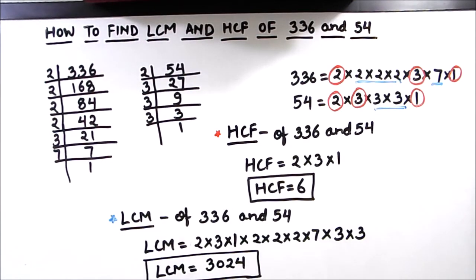So this is how, by using the prime factorization method, you can find the LCM and HCF of any numbers easily. I hope this video is helpful to you. If you like the video please give it a thumbs up and subscribe to my channel for more math videos. Thanks for watching.